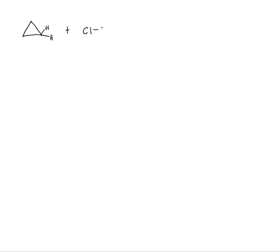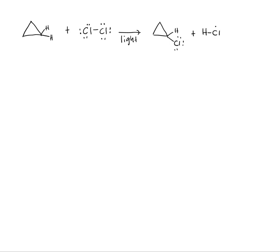Cyclopropane — each of those carbons has two hydrogens. On the right, the cyclopropane reacts with molecular chlorine, Cl₂. Each chlorine has three lone pairs around it. You need light or heat, and what will happen is one of the two H's gets replaced by a Cl, and the H that was removed from cyclopropane is now with the other Cl to form HCl.